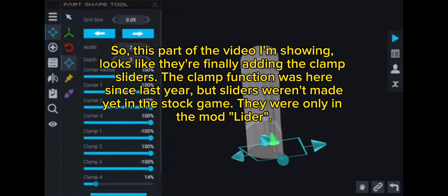So, this part of the video I'm showing looks like they're finally adding the clamp sliders. The clamp function was here since last year, but sliders weren't made. Yet, in the stock game, they were only in the mod lighter.